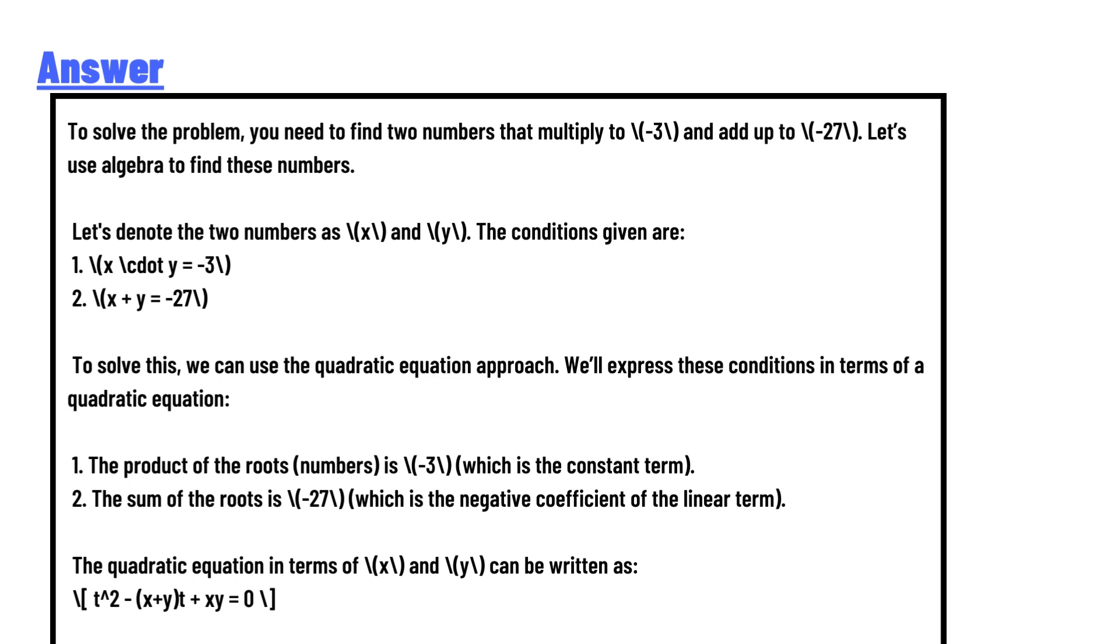The answer: to solve the problem, you need to find two numbers that multiply to three and add up to negative 27. Let's use algebra to find these numbers.